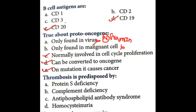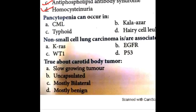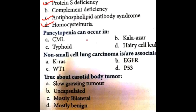Proto-oncogene on mutation causes cancer. Next question: thrombosis is predisposed by — protein S is an anti-thrombotic factor, so thrombosis is predisposed by protein S deficiency. Anti-phospholipid antibody syndrome causes antibody-mediated thrombosis in blood vessels. Homocysteinuria predisposes to arterial and venous thrombosis. So thrombosis is predisposed by protein S deficiency, anti-phospholipid antibody syndrome, and homocysteinuria.